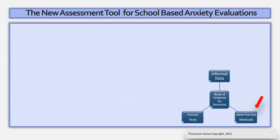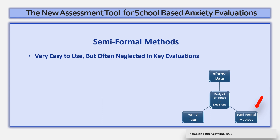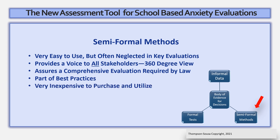Because the least well-known area of the three-factor model is the semi-formal methods area, let's take a deeper dive to better understand it. Semi-formal methods are very easy to use but often neglected in key evaluations. Semi-formal methods, especially rating scales, provide a voice to all stakeholders, offering a 360-degree view of a child's problem. Rating scales and semi-formal methods assure a comprehensive evaluation, which is required by law and is also part of best practices. Finally, semi-formal methods are very inexpensive to purchase and to utilize in your evaluation.